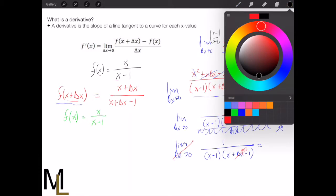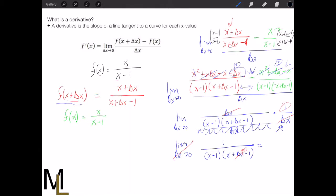And what we're left with now is one over x minus one, x minus one. And so since there are no more delta x's left, we have our solution.